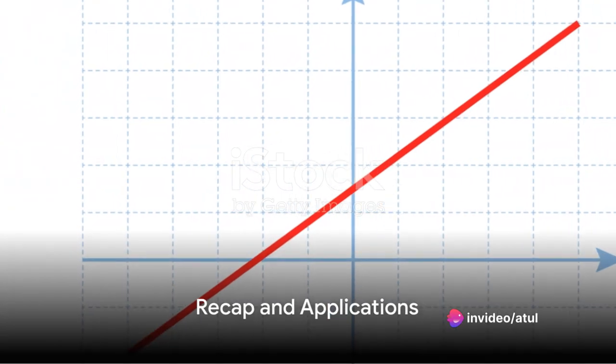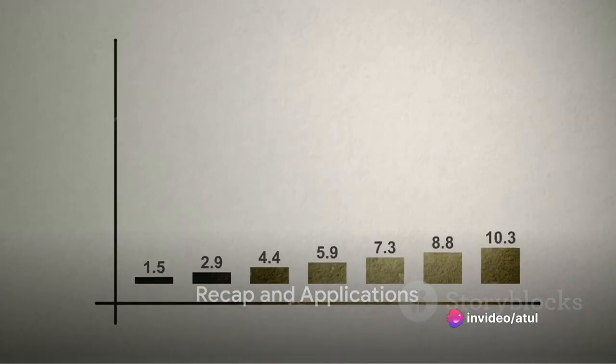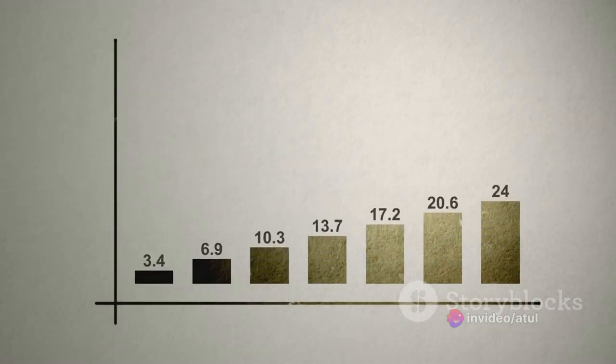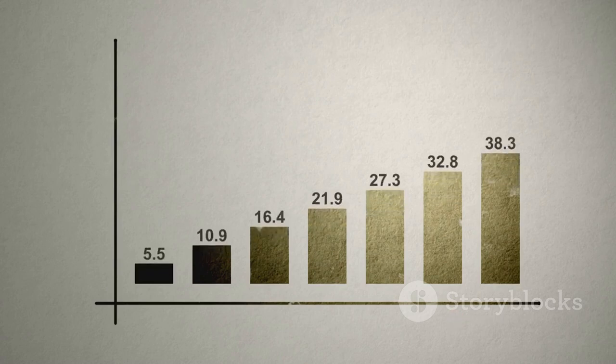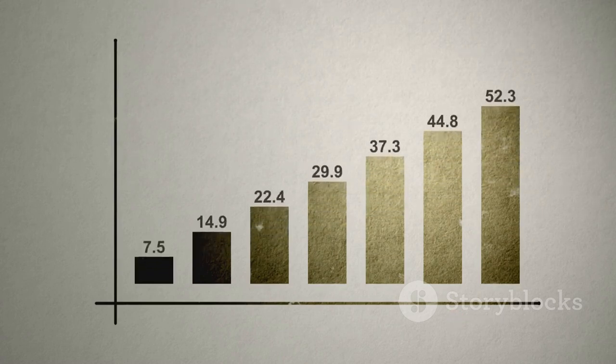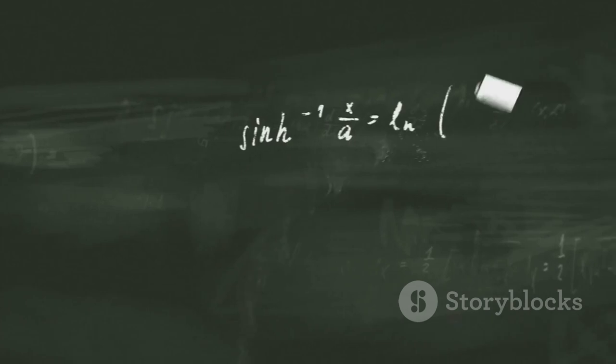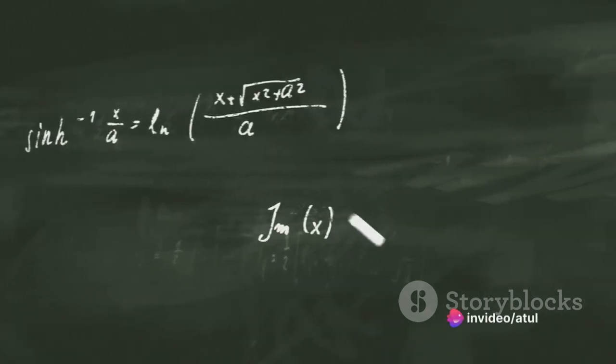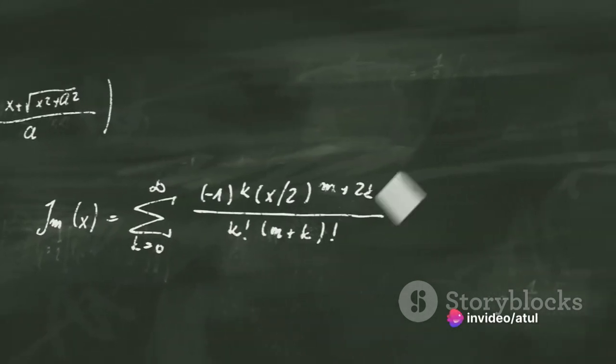So to recap, linear regression is a method of predicting future values based on past data. It involves drawing a line of best fit through a scatter plot of data points. This is done by minimizing the sum of the squares of the errors using the least squares method.